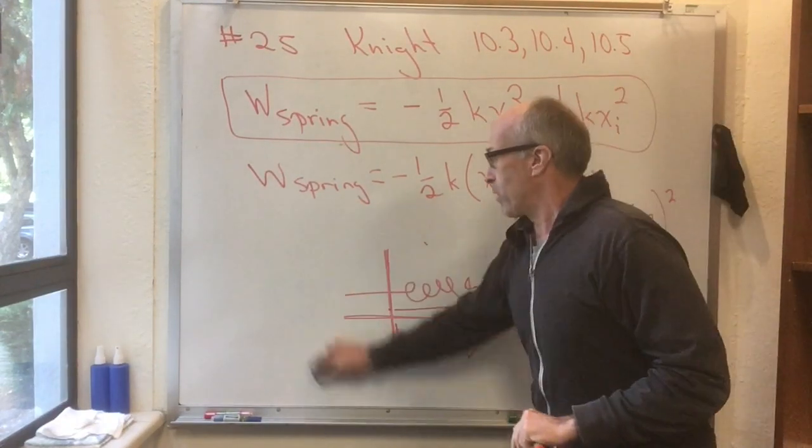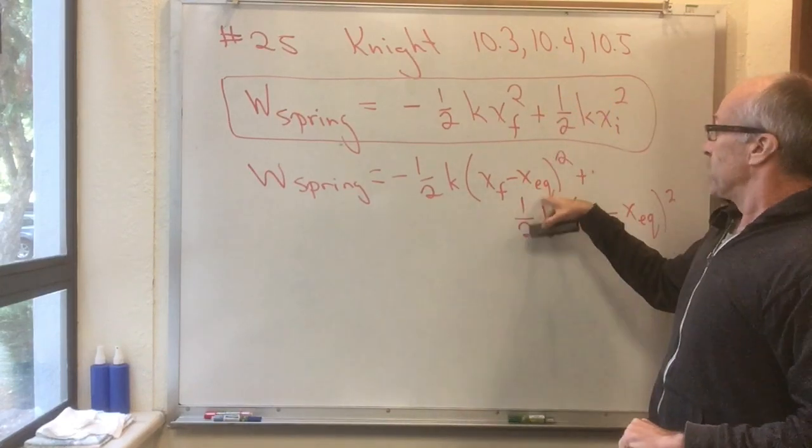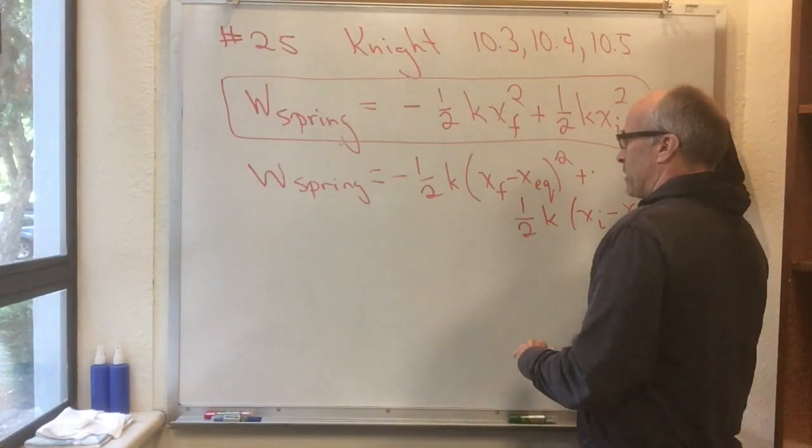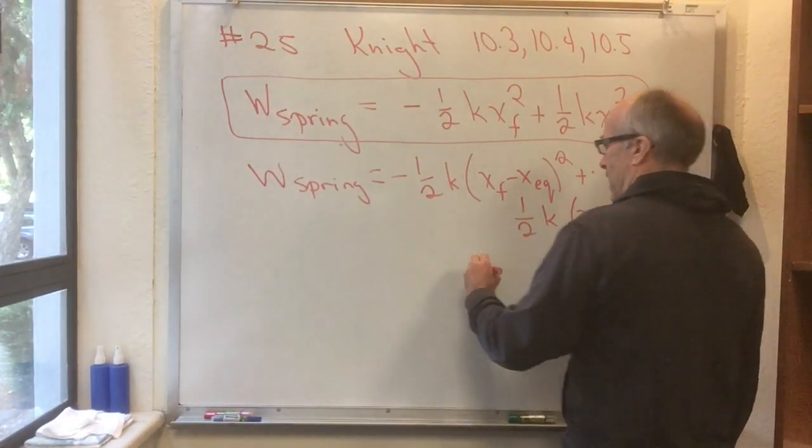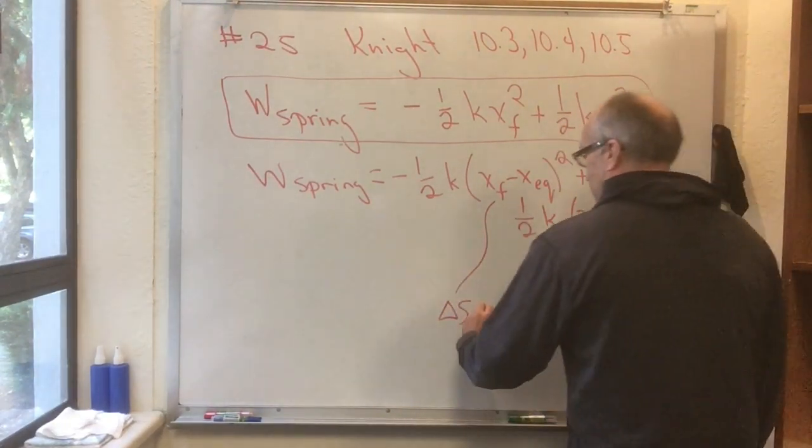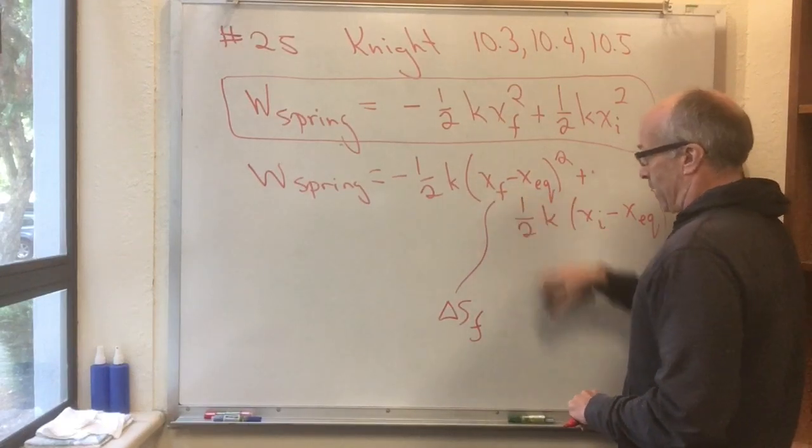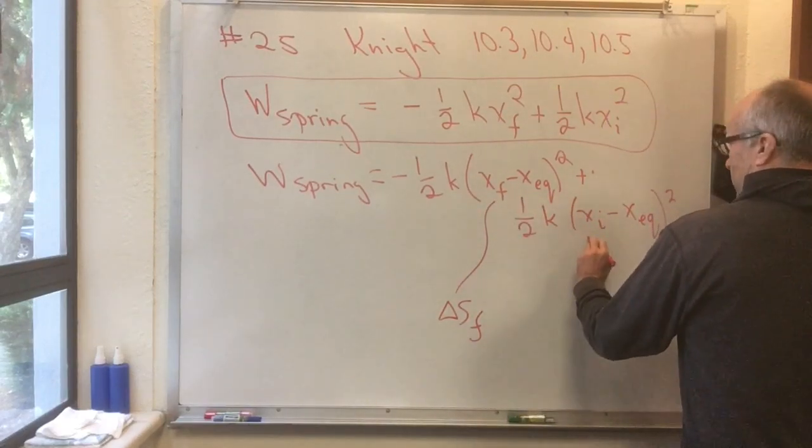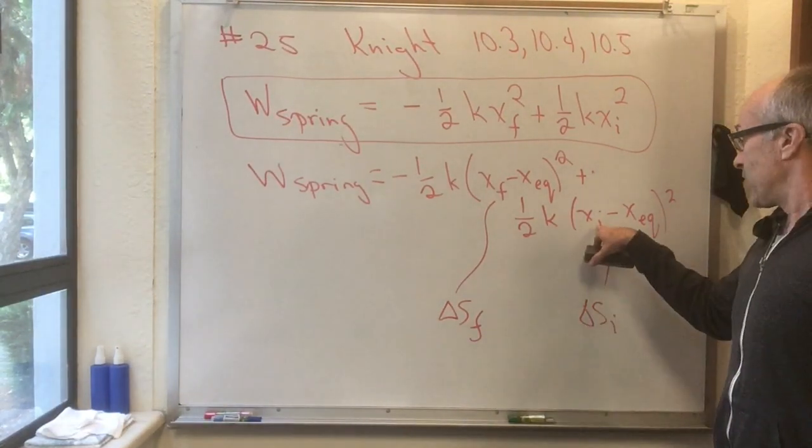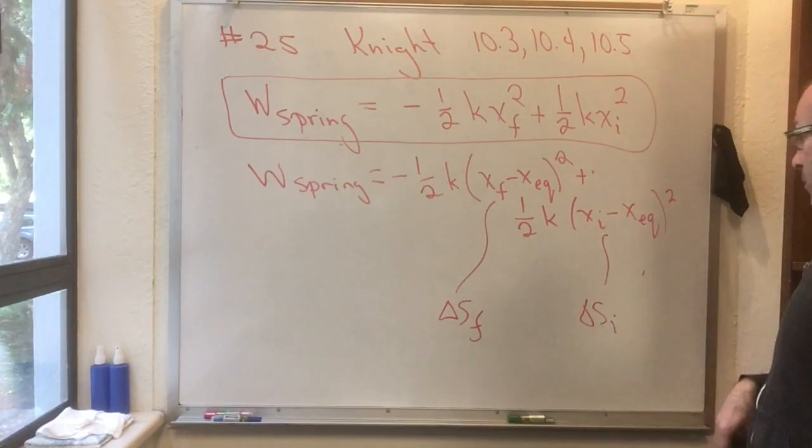And you can see, of course, if I smartly choose x equilibrium to be 0, I get right back to that equation. And sometimes Knight writes this as delta s, and this would be delta s final, where delta s final means the difference between x final and x equilibrium. And of course, this then would be delta s initial, where delta s initial was the initial difference between x initial and x equilibrium.